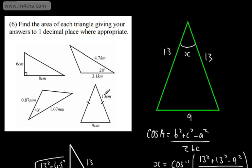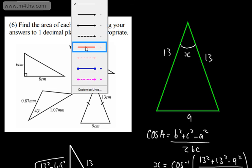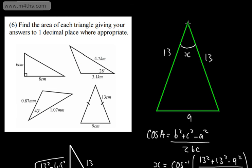Being flexible will help, but hopefully that's given you a nice introduction to finding the area of a triangle when we don't always have the perpendicular height. Essentially, all we're looking to do is find a perpendicular height and a base so that we can do 1/2 AB. So there we go — an introduction to the area of a triangle.